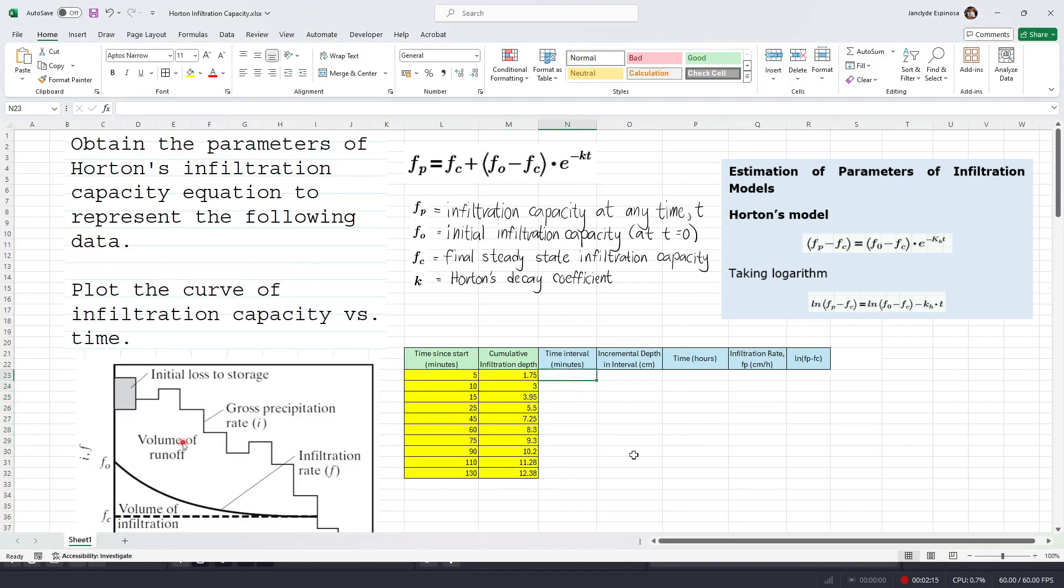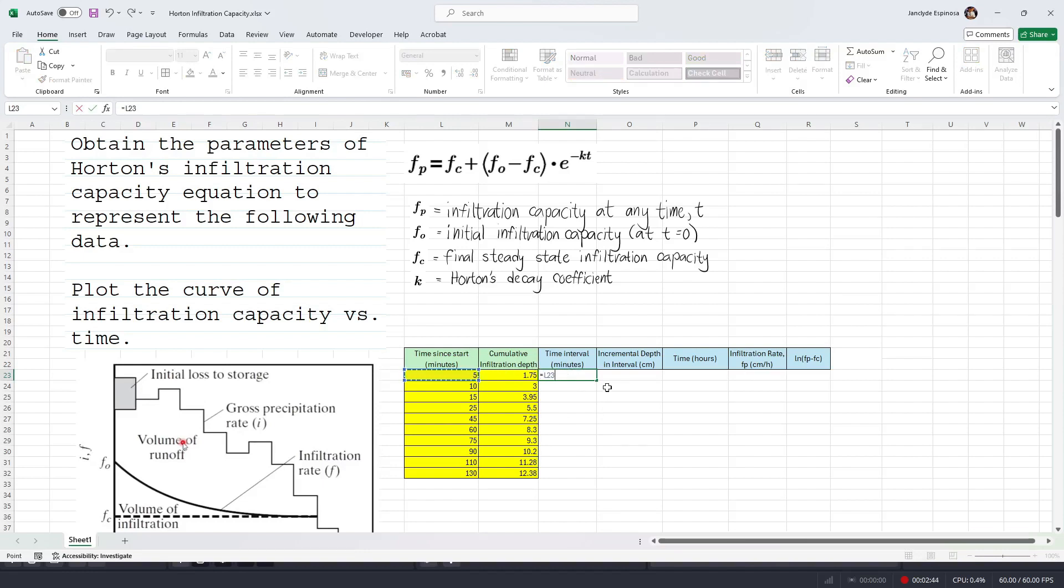Now, we're first gonna define the time interval. For the first row, it's just going to be equal to the time since start. While for the succeeding rows, it's gonna be the current time since start minus the time since start of the previous one or the previous row. And so, to do this for the remaining rows, just double-click once you see the plus sign to follow the formula. Now that we have the time interval, we're gonna fill up the incremental depth in interval. It will follow the same pattern as the time interval where the first row is going to be the cumulative infiltration depth within the first row while the succeeding rows will be the current cumulative infiltration depth minus that of the previous one. So double-click again to fill up the remaining rows.